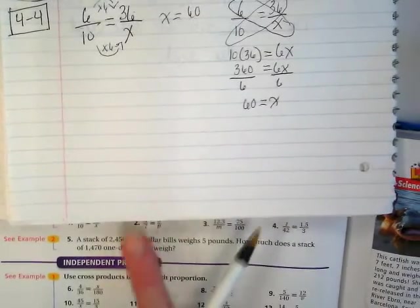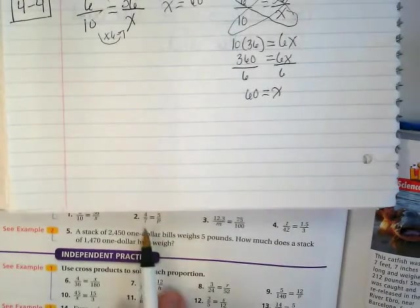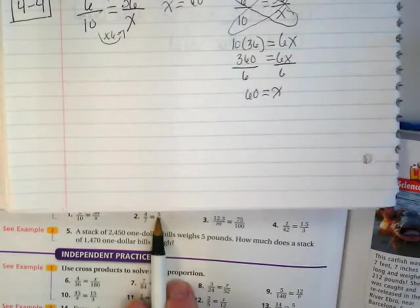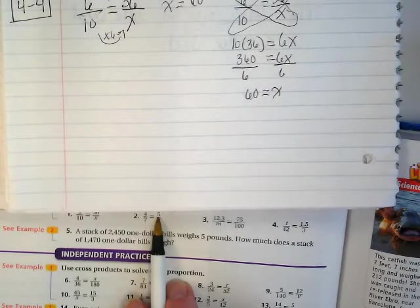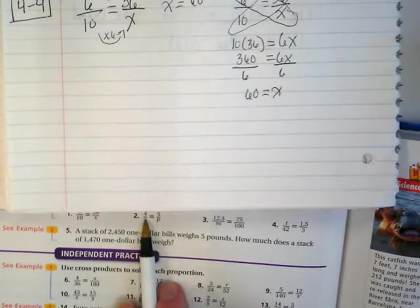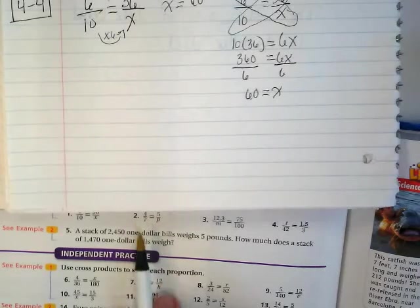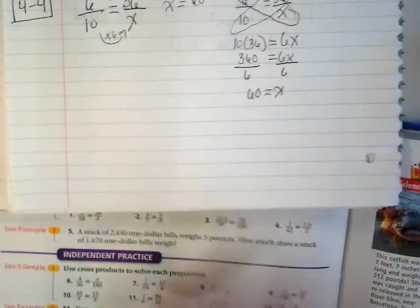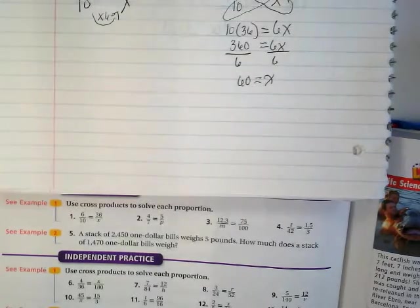And we can do that with all of these problems here. So if I did 7 times 5, we get 35 divided by 4, we're going to get a decimal. When you look at this problem down here, let me zoom in a little bit so you guys can see it better.